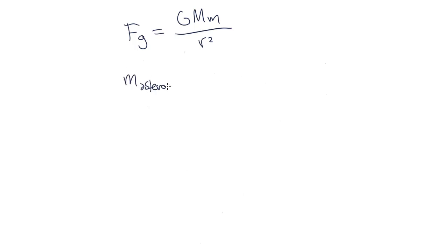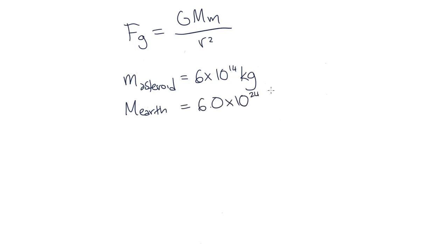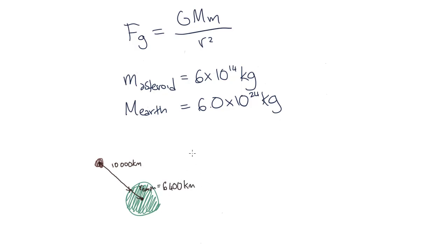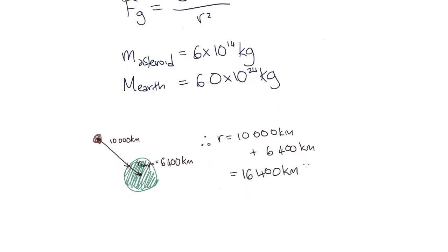We've been given the mass of the asteroid at 6 times 10 to the 14 kilograms, and the mass of the Earth we can look up and find is 6.0 times 10 to the 24 kilograms. Now let's find r. We know the asteroid is 10,000 kilometers above the surface, and the radius of the Earth is 6,400 kilometers. Therefore, r equals 10,000 plus 6,400 kilometers, which gives us 16,400 kilometers.